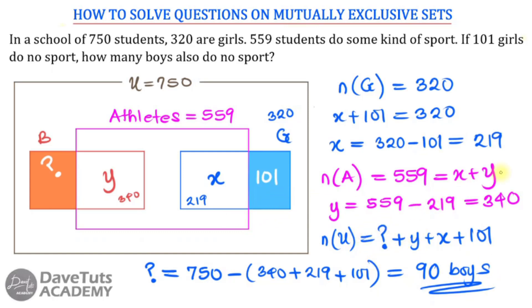We're able to interpret the question effectively because we understand it is a mutually exclusive set — some regions do not overlap. A person cannot be a boy and a girl at the same time. But a boy can be into sports and a girl can also be into sports, so those are the athletes, and by working with the numbers we arrive at the final solution.